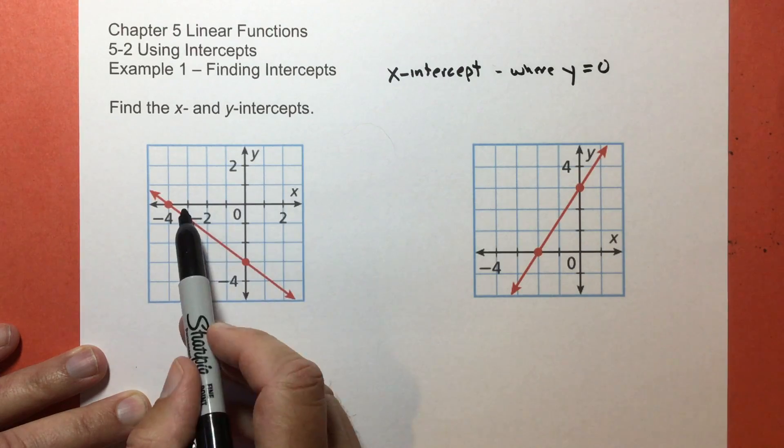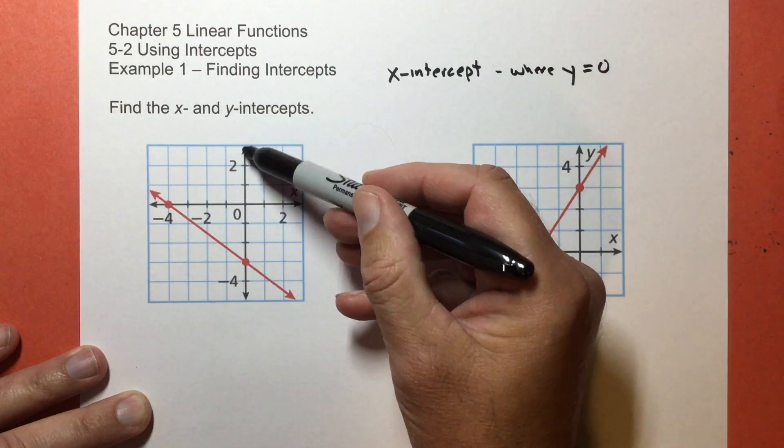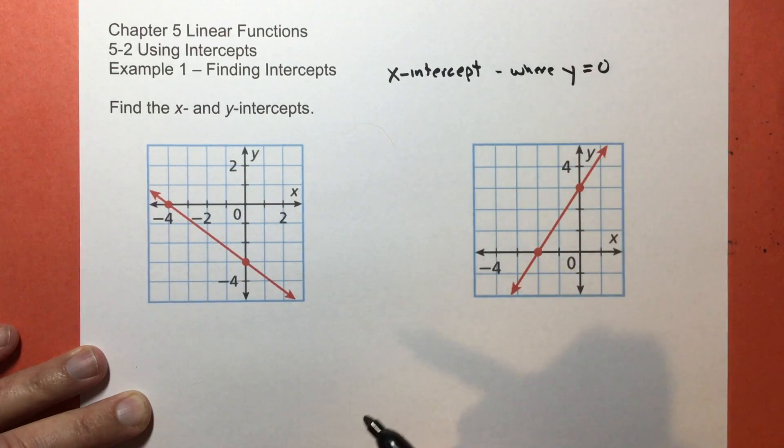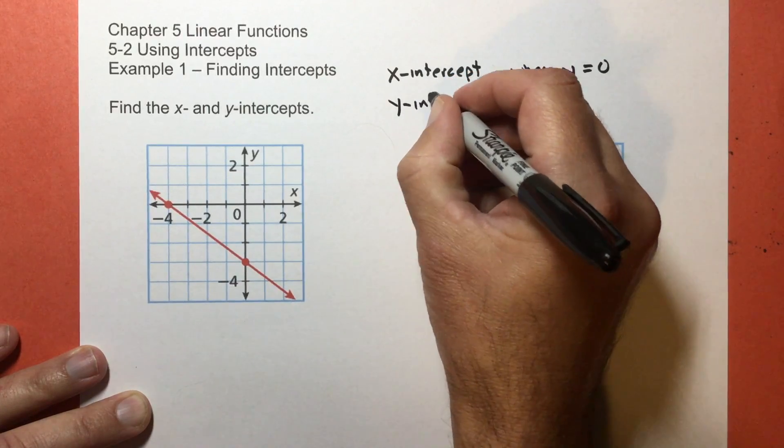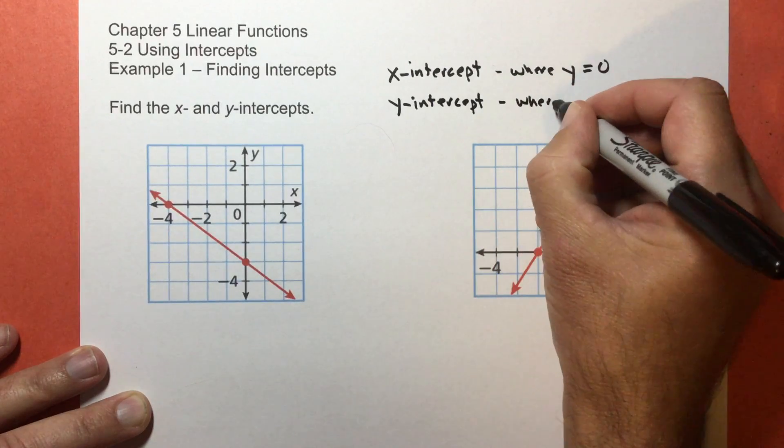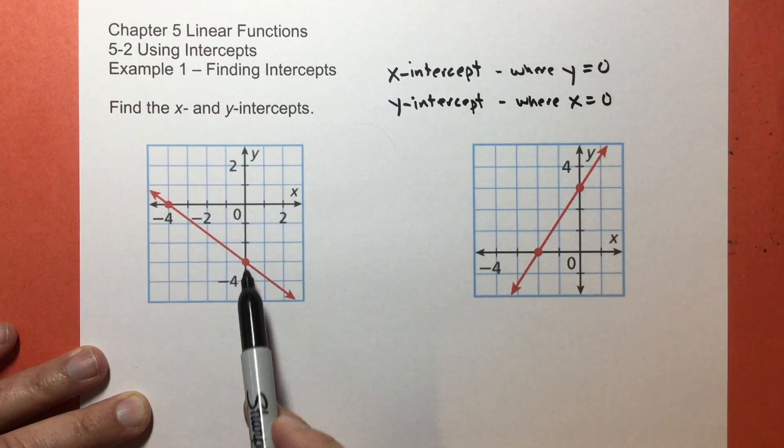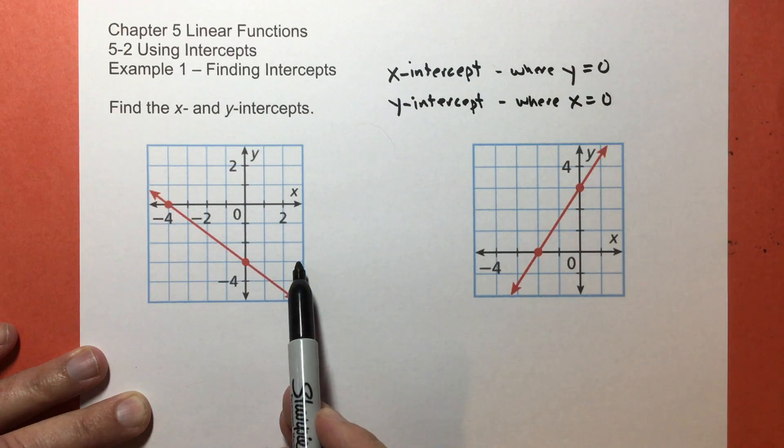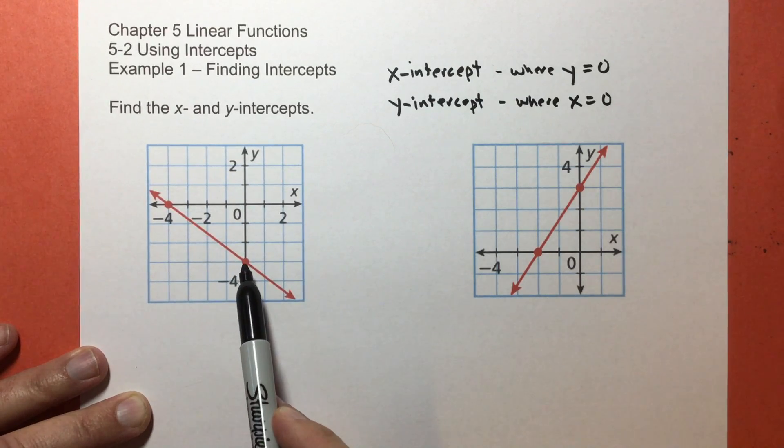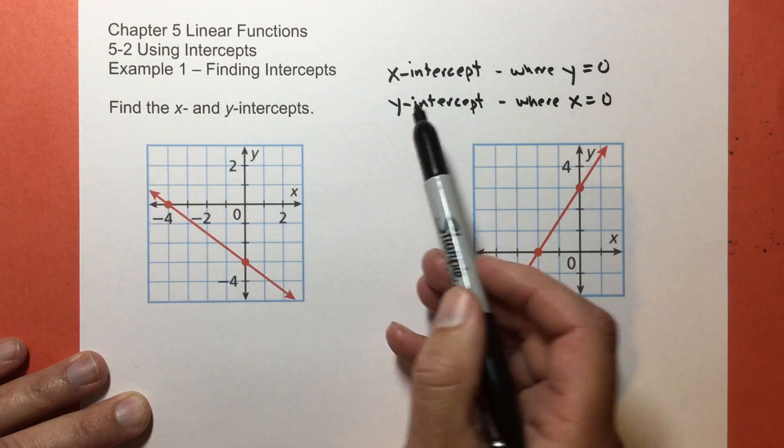So this point right here is on the x-axis. When y is positive it goes up, and when y is negative it goes down, but here it's not going up or down, so that's where y equals zero. For the y-intercept, this is where x equals zero. So the y-intercept is right here on the y-axis. If I went to the right, x would increase, and if I went to the left, x would decrease. Right here on the axis, x equals zero. So to find the x and y-intercepts, we look for where the other one equals zero.